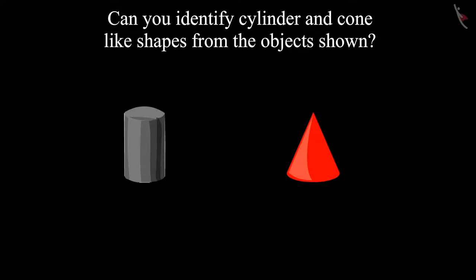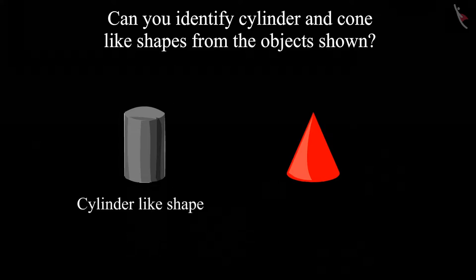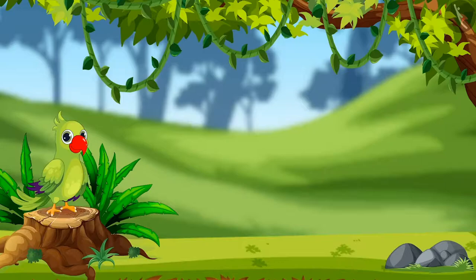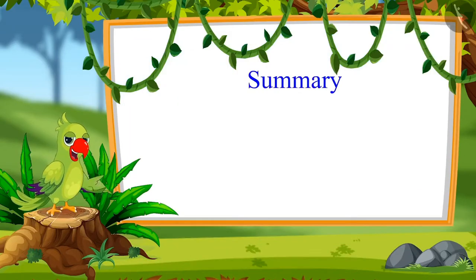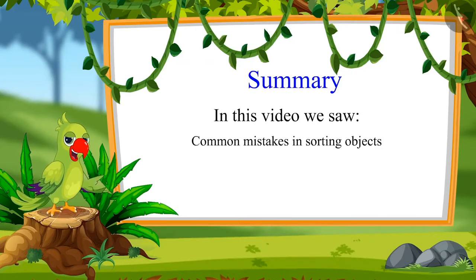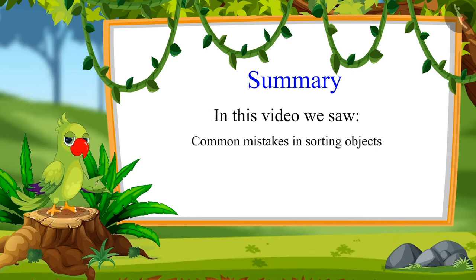The teacher asks: 'Children, was your answer the same?' She then summarizes: 'The cylinder-like shape is round on both sides, but the cone-like shape is round on one side and pointed on the other side.' That was all for today — the video covered common mistakes in sorting objects. Bye, children!